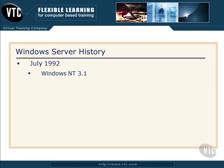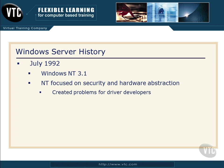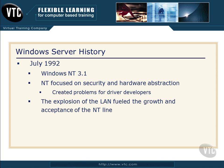Way back in July 1992, Microsoft released a product called Windows NT 3.1. It was focused on security and hardware abstraction, which created problems for driver developers. The original PC was built with absolutely no security consideration. Hard to believe now, but that's the way the world was then. As the local area network grew, we started to see security problems, and NT focused on this with the actual architecture of the operating system.